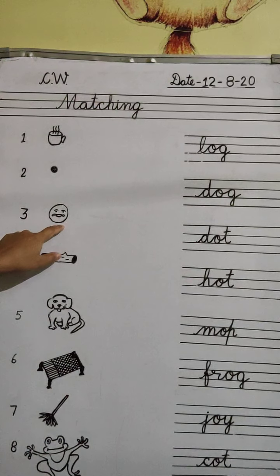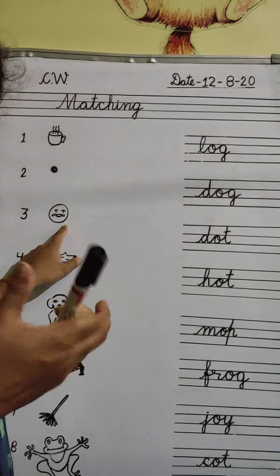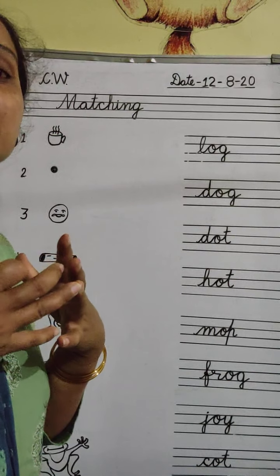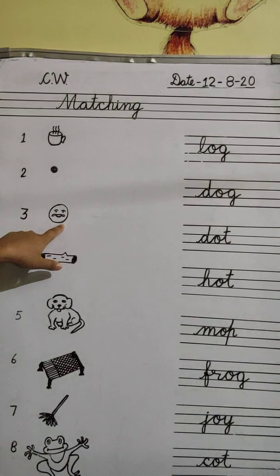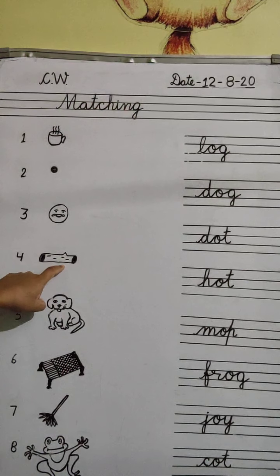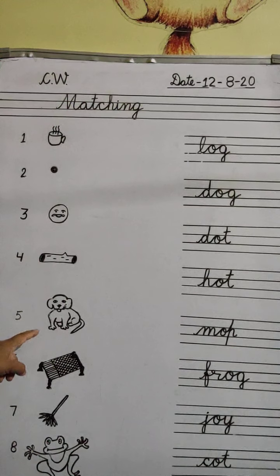Next — what is this? This is a face, but which type of face? A joy face. When we feel happy, our face expression is happy. So this is a joy face. Okay, and next — what is this? Log. Log means a log. Okay, next — what is this? This is a dog.